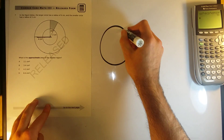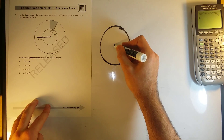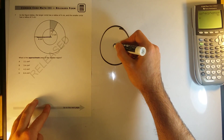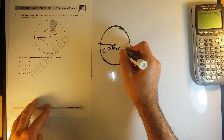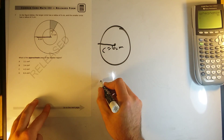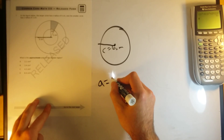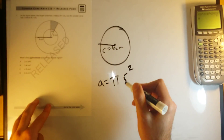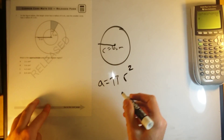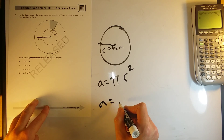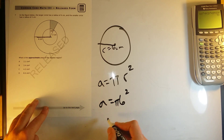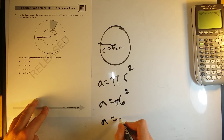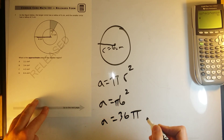The big circle has a radius of six centimeters, so the area of this circle would be — our equation for area is pi times the radius squared. The radius is six, so area is going to be equal to pi times six squared, and six squared is 36, so 36 pi.